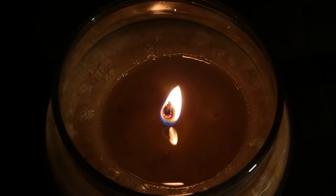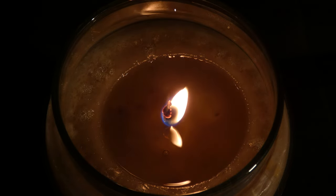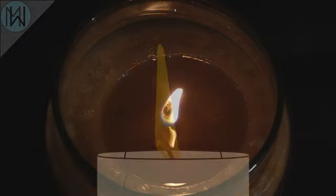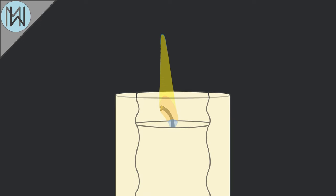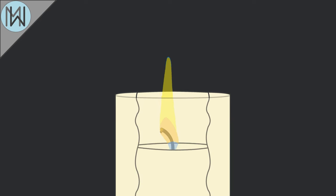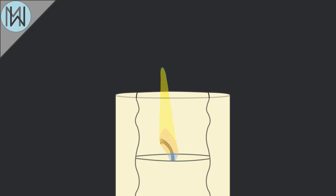A weak flame will not produce enough heat to melt the entire top layer of the candle, and as the candle burns, the wick will tunnel through the wax, leaving a ring of unburnt wax around the perimeter.